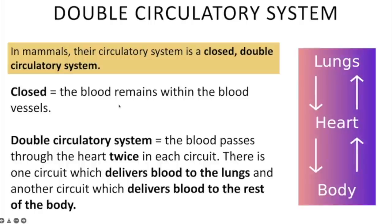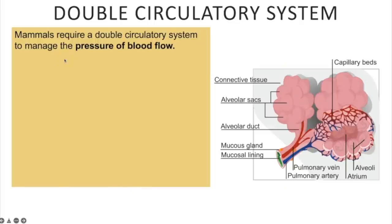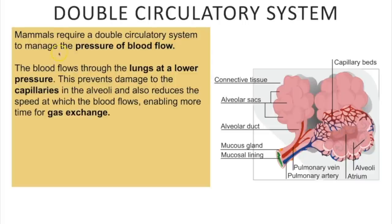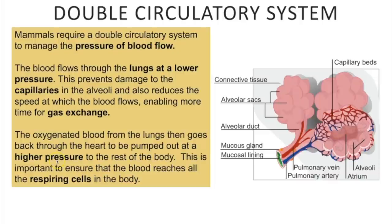In mammals the circulatory system is closed — blood remains within blood vessels — and double, meaning blood passes through the heart twice per circuit. One circuit delivers blood from heart to lungs, the other from heart to the rest of the body. A double circulatory system manages blood pressure: blood flows through the lungs at lower pressure to prevent capillary and alveoli damage and to allow more time for gas exchange. Oxygenated blood then returns to the heart and is pumped at higher pressure to the rest of the body to reach all respiring cells.